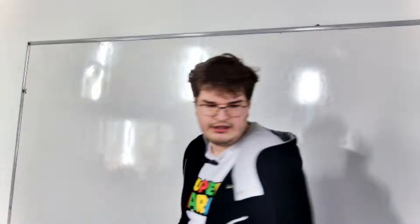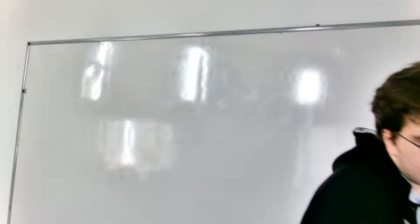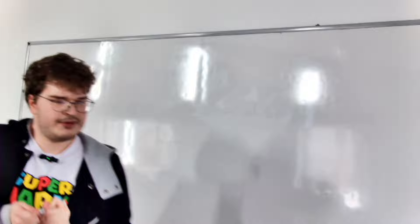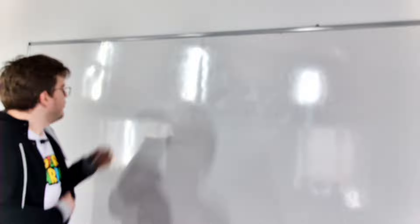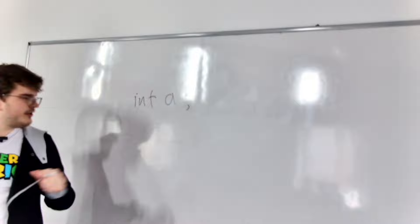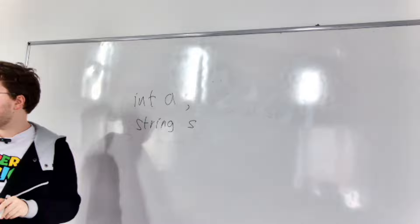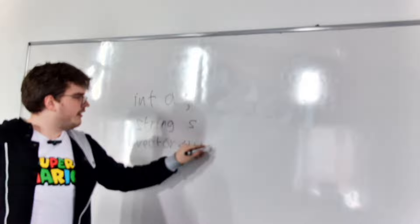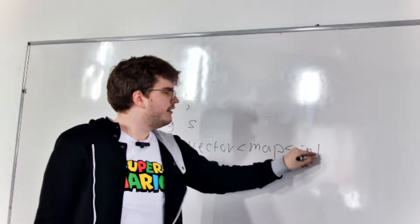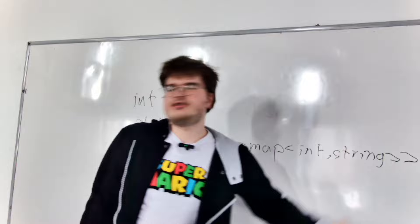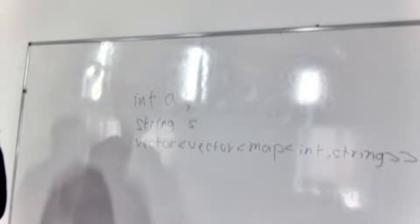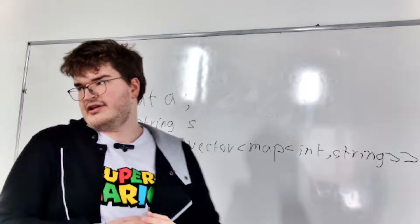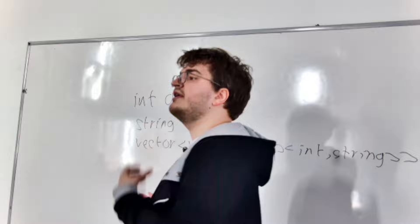It means that all variables at all times should have a defined type. For instance, if I do `int a`, the type of the variable is integer. If I try `string s`, what type is that? And if I do `vector<vector<map<int, string>>> m`, the type is vector of vectors of maps of integers of strings — a very complex type, but it's still all defined.